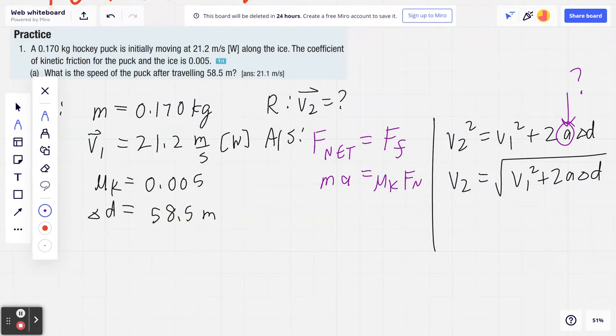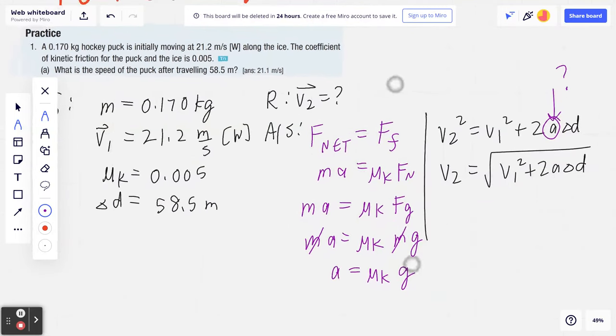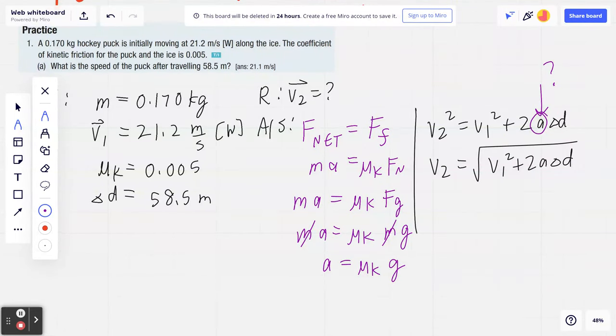If you look at the left-hand side, that's ma. On the right, μk × FN is the same as μk × Fg. Think about FN, the normal force, and Fg, the force of gravity. They're equal in magnitude but opposite in direction. If you keep going, Fg = mg. Notice you can cross out m from the left and right. This tells you it's independent of m, and you see this quite often in physics. I'm going to keep going with the calculation.